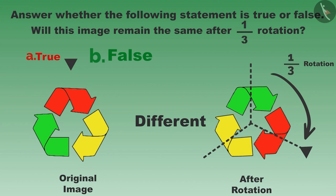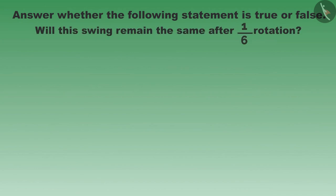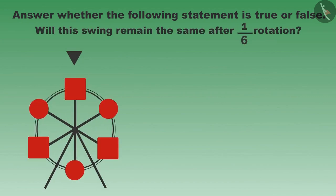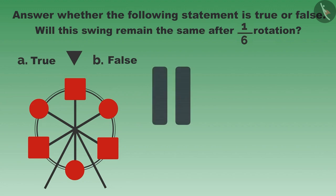Let us look at another example. You must have seen this circular swing — look at it very carefully. Will it remain the same even after one-sixth rotation? Let us rotate it. You can pause the video and think for a while.